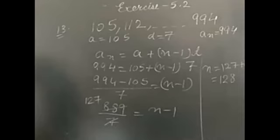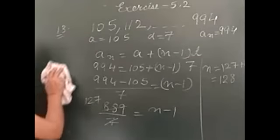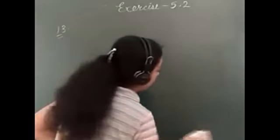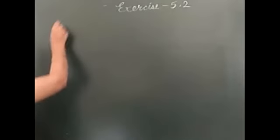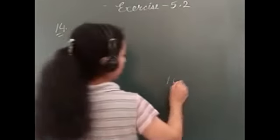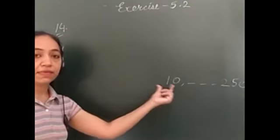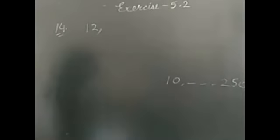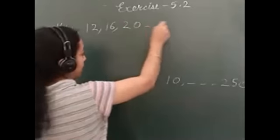How many multiples of four lie between ten and two fifty? Multiples of four which lie between ten and two fifty. What is the next multiple of four after ten? Fourteenth question. We have to write multiples between ten and two fifty. Multiples of four. So, the number divisible by four after ten is twelve. And the next one after that? Twelve plus four. Sixteen. Twenty.